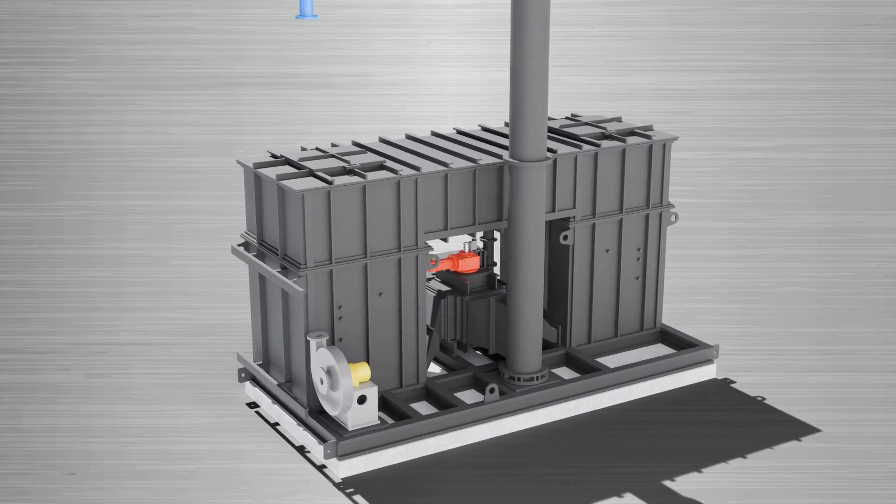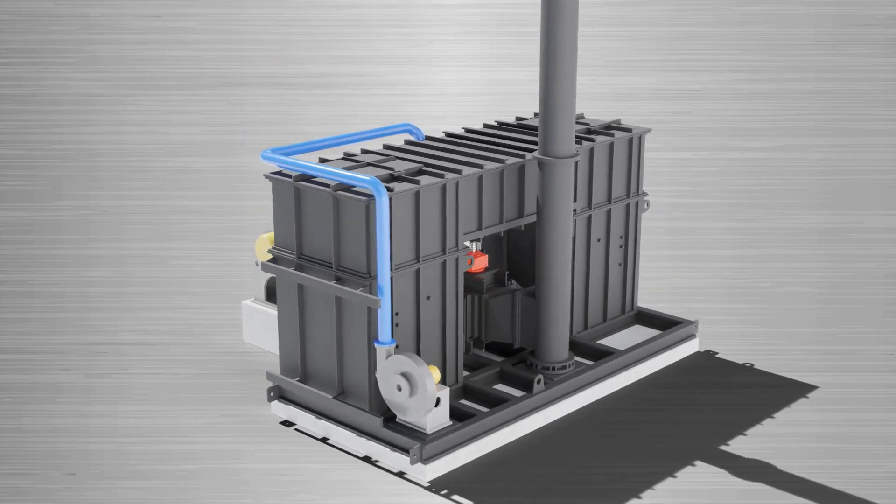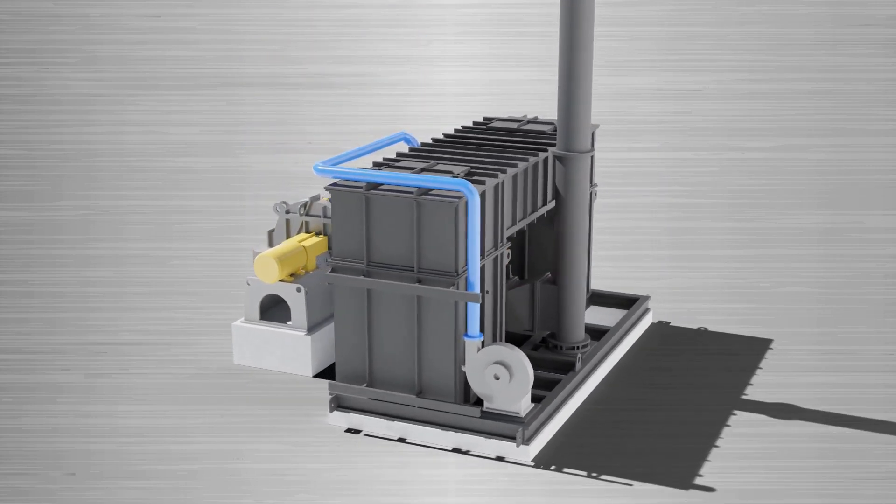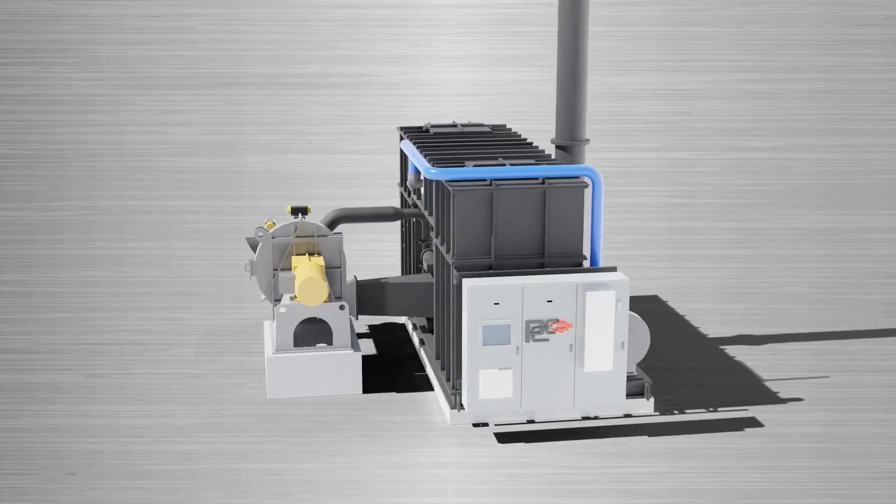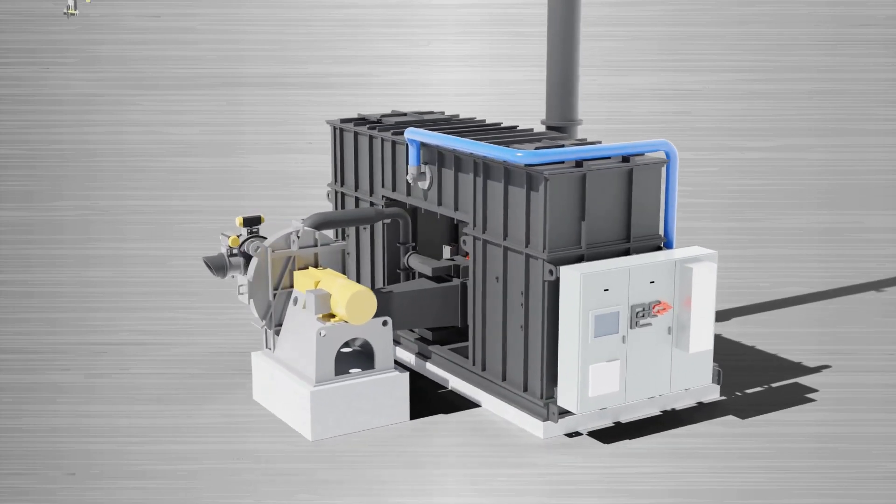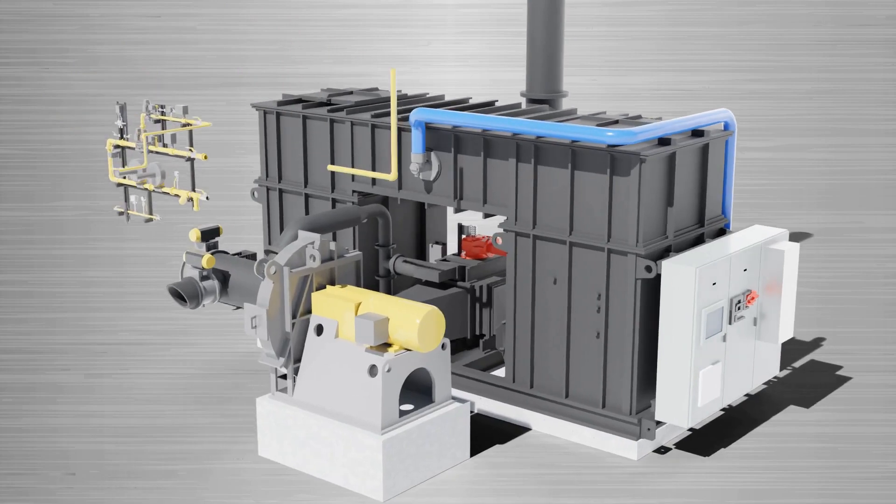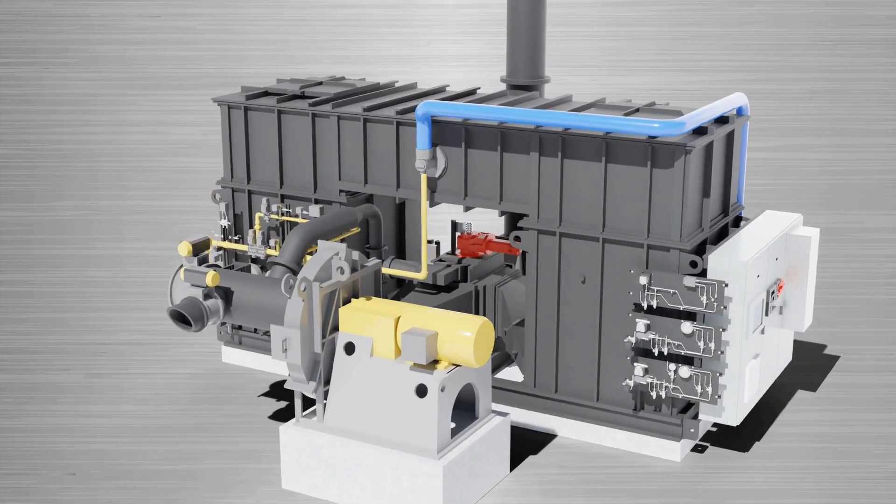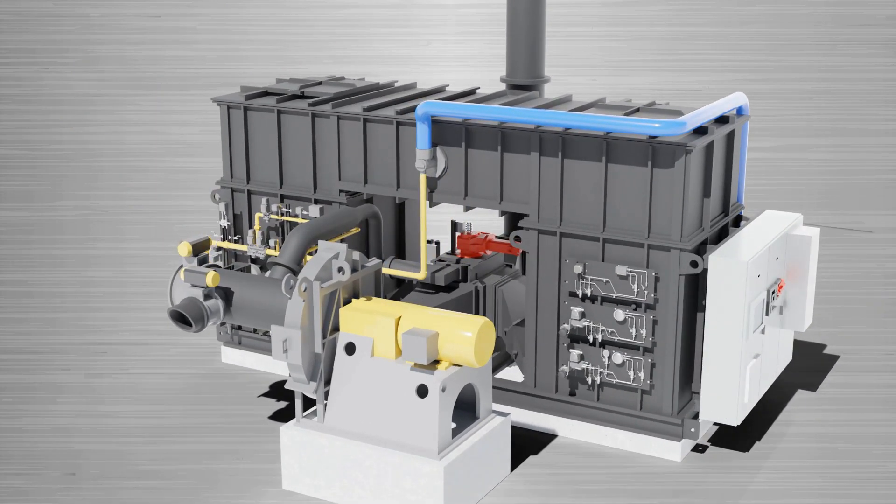As size allows, nearly all components of the RTO system can be skid-mounted, shop assembled, wired and tested. This allows for quick and easy equipment installation. Here the combustion air blower, PLC control panel, gas drain and pressure manifolds are all mounted to the skid.